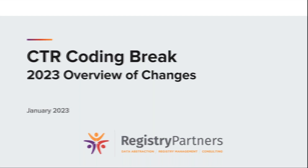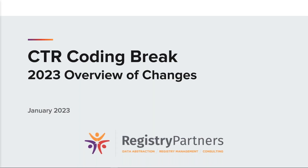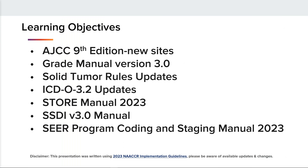Thanks, Carrie. We have a jam-packed 15 minutes, so I'm going to jump right in. I might go a little bit fast, but we're going to talk about the AJCC 9th edition new sites, the Grade Manual version 3.0, the solid tumor rules updates, the ICD-O 3.3 update, the STORE Manual 2023, the SSDI v3.0 manual, and the SEER Program Coding and Staging Manual issued in 2023.